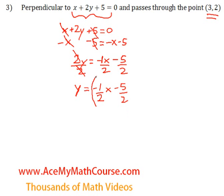So we know the slope of this line is negative half because it's already in y equals mx plus b format. So whatever's multiplying the x is the slope. So that is the slope of this line.